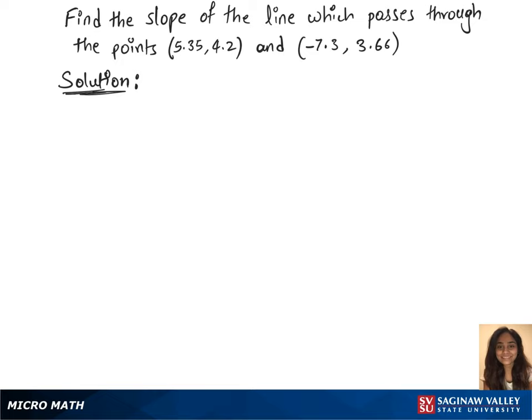To find the slope of the line which passes through the points (5.35, 4.2) and (-7.3, 3.66),